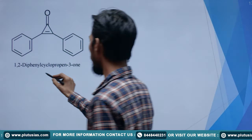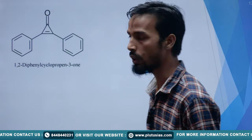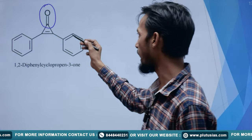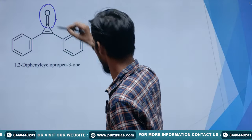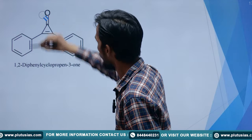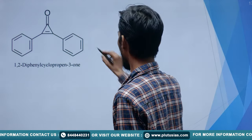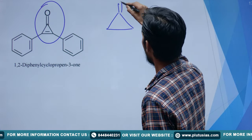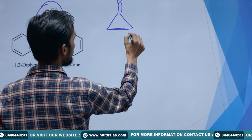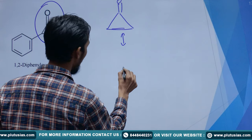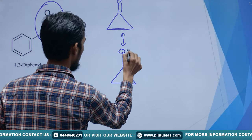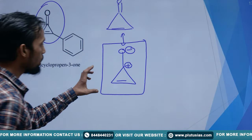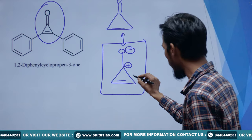Now coming back to the question — this is our 1,2-diphenylcyclopropenone. As shown, nucleophilic addition most of the time takes place at the carbonyl. But by visualizing it, while it looks like a ketone, this compound is actually in resonance. If I draw only the ring part, its resonating structure looks like this — the compound mostly exists in this resonance form.